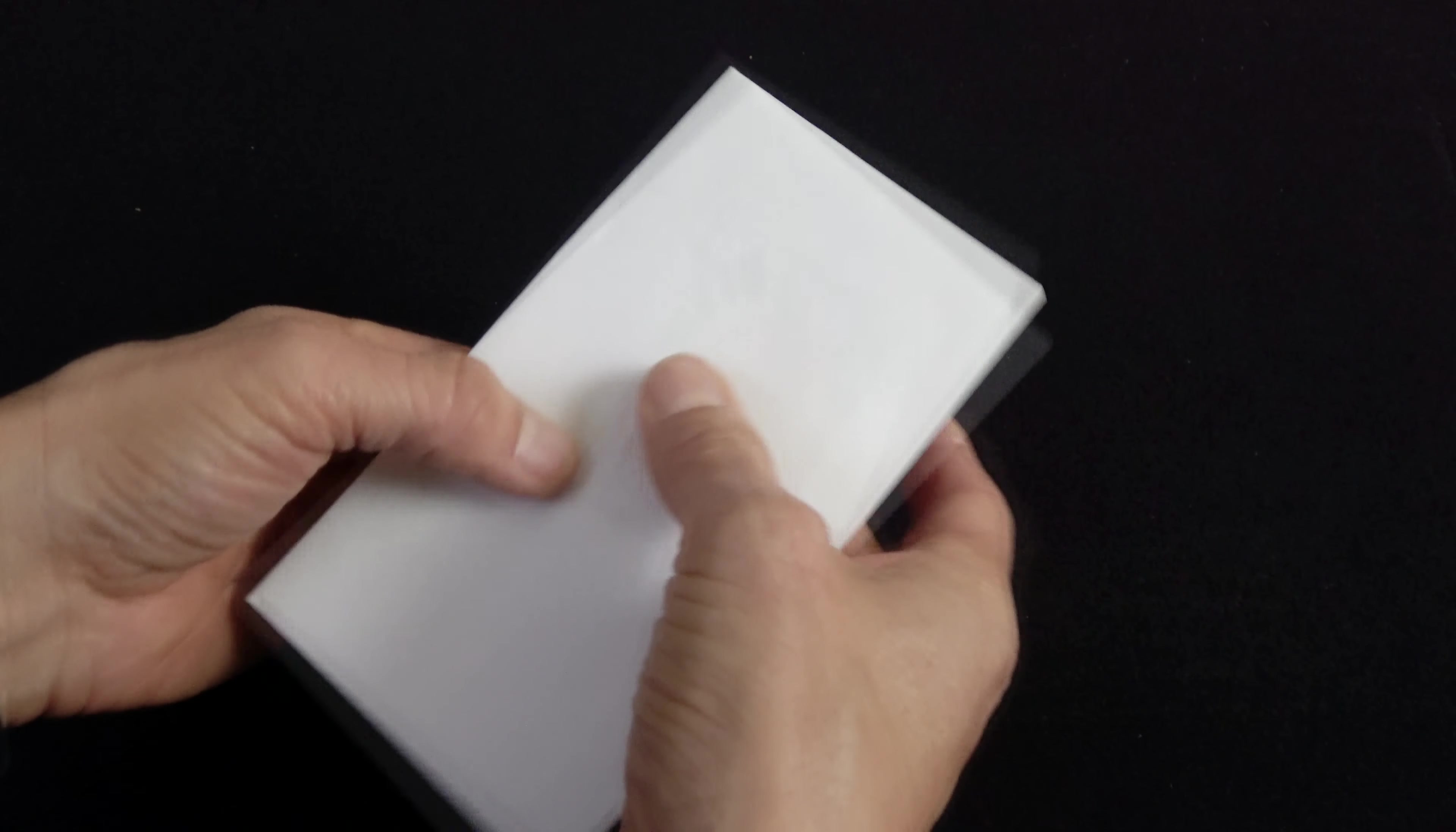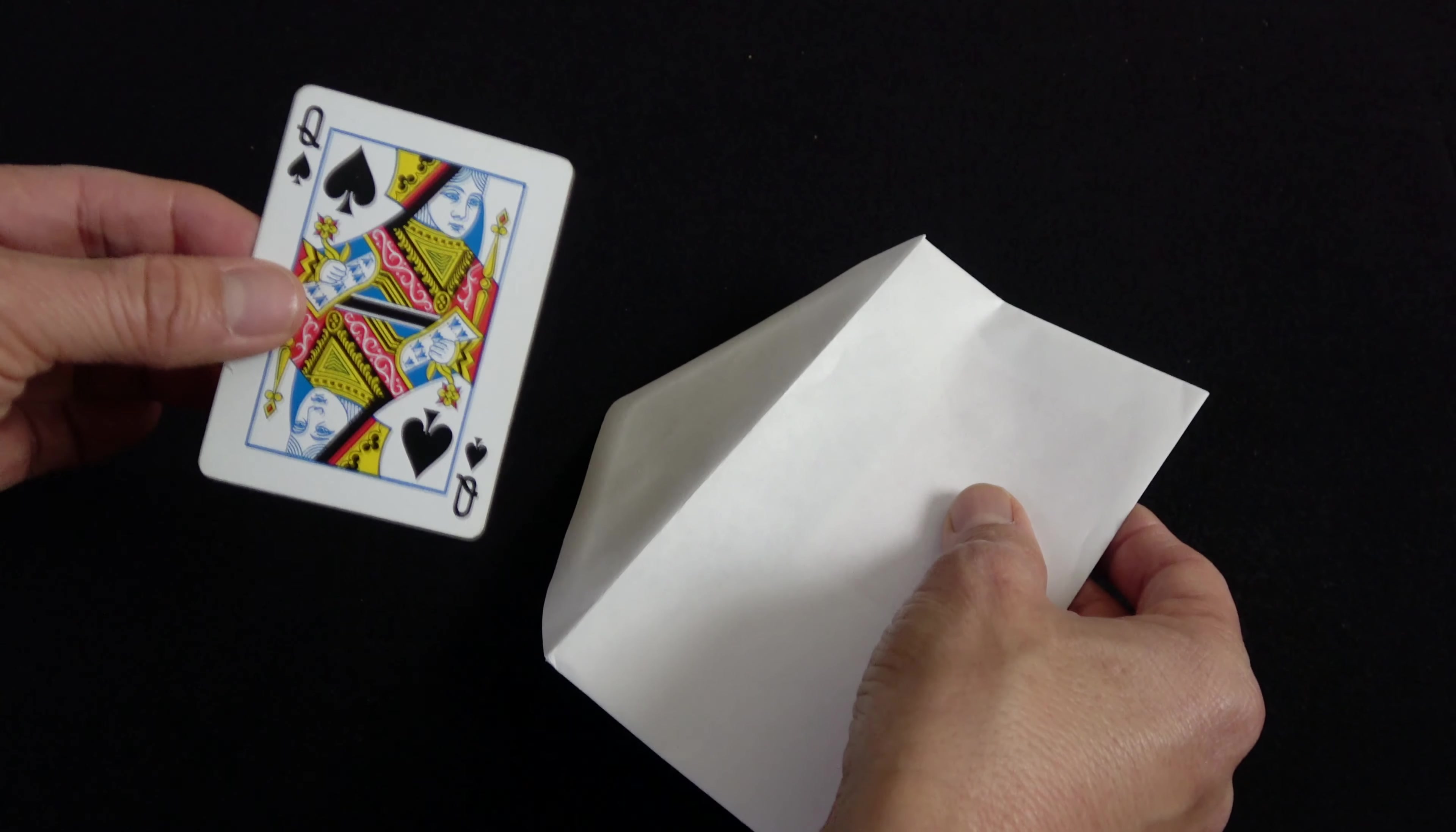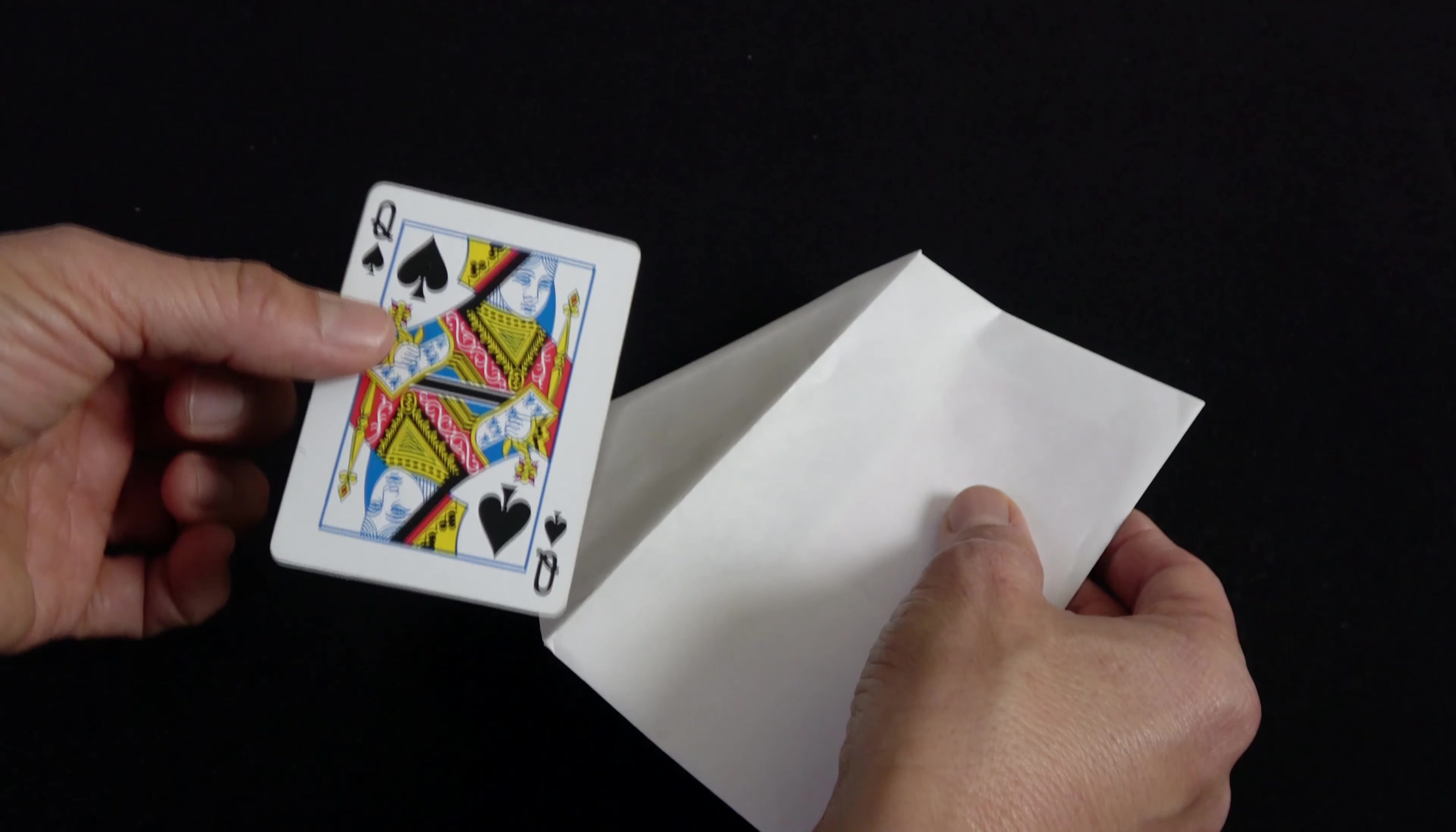Now for the magic. Turn the envelope over, snap your finger, and then you're going to remove a couple cards. You're going to remove the queen of spades. But what the spectators don't know is that when you turned over the envelope, you turned over the gimmick card. On the back is something that looks like this. That's the secret.